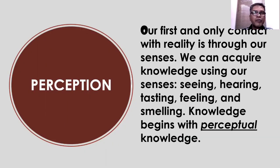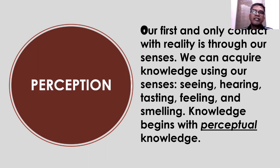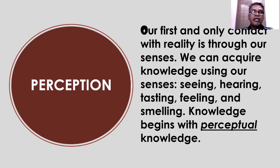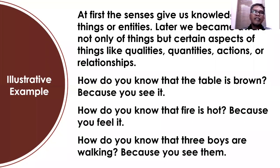Second is perception. Our first and only contact with reality — with those things existing in this world — is through our senses: sense of seeing, hearing, tasting, feeling, and smelling. These are the five senses, and we can acquire knowledge using our senses. Knowledge begins with perceptual knowledge — the knowledge we can acquire through seeing, hearing, tasting, feeling, and smelling. At first, the senses give us knowledge of things or entities. When you see this table, you know it is a table because you know its nature.